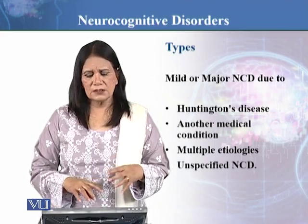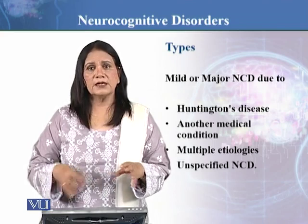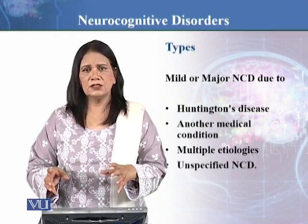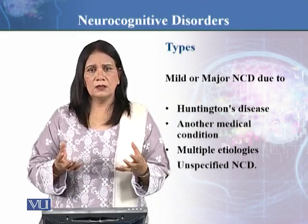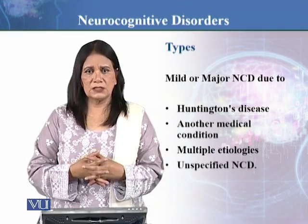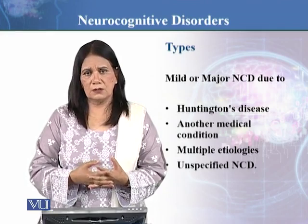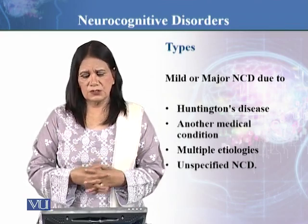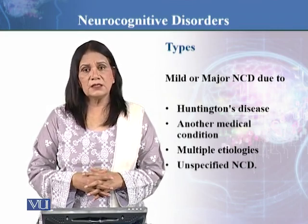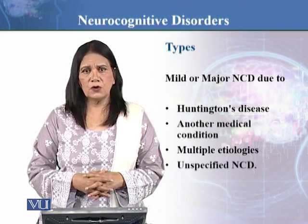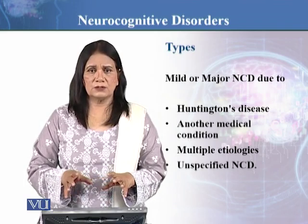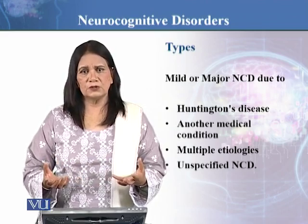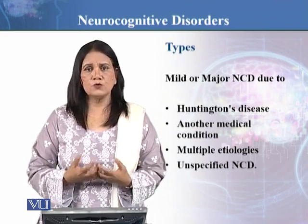Then there is Huntington's disease. There are also other medical conditions — not necessarily the ones we have talked about. Multiple etiologies means that sometimes it is quite complex and there are many conditions, or a combination of conditions, that create neurocognitive disorders — whether bodily or brain conditions. There are also disorders known as unspecified neurocognitive disorders, where the typology does not clearly indicate a specific cause, but pronounced neurocognitive deficits are present.